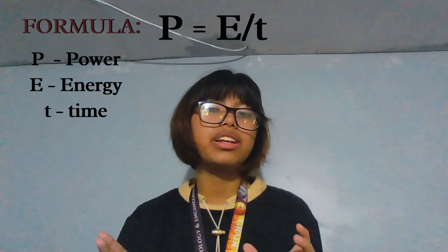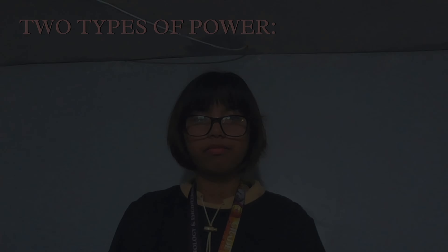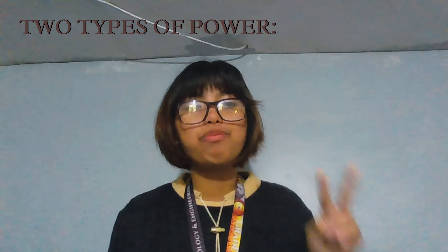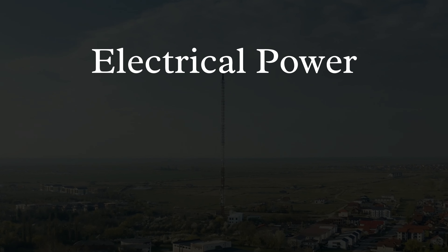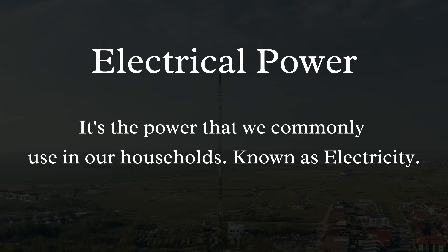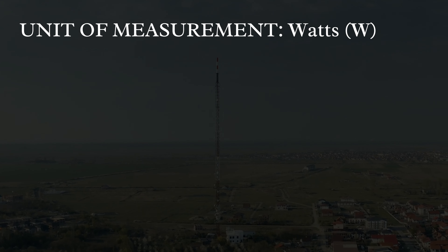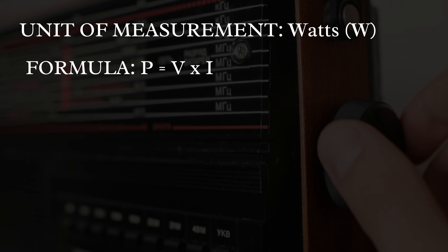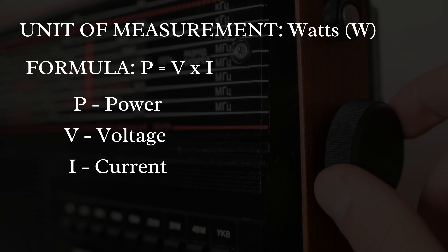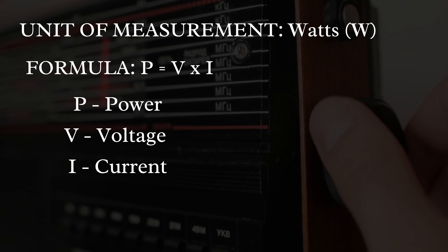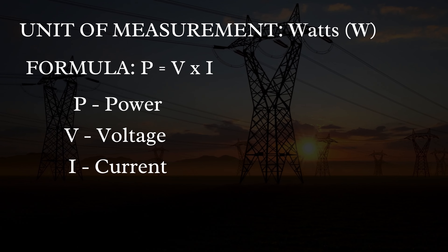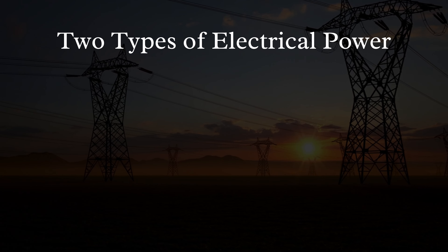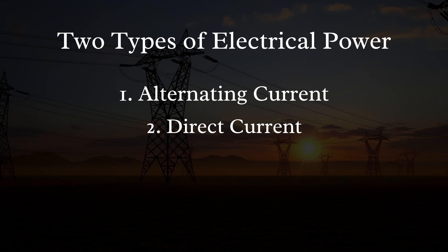This formula applies differently in electrical and mechanical systems. There are two types of power: electrical power and mechanical power. Electrical power is the power commonly used in households — it is measured in watts. The formula for electrical power is P equals V times I, where P is power, V is voltage, and I is current. There are two types of electrical power: alternating current and direct current.